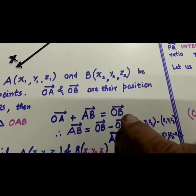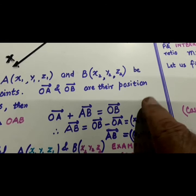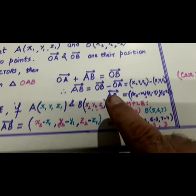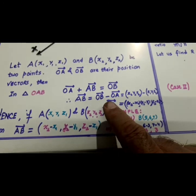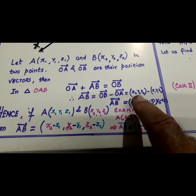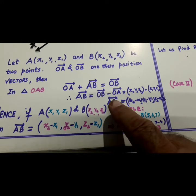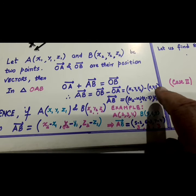Now, we have to find AB. AB will be equal to OB minus, take this OA on this side. It has become AB equals OB minus OA. That is, OB is X2, Y2, Z2 and OA is X1, Y1, Z1.